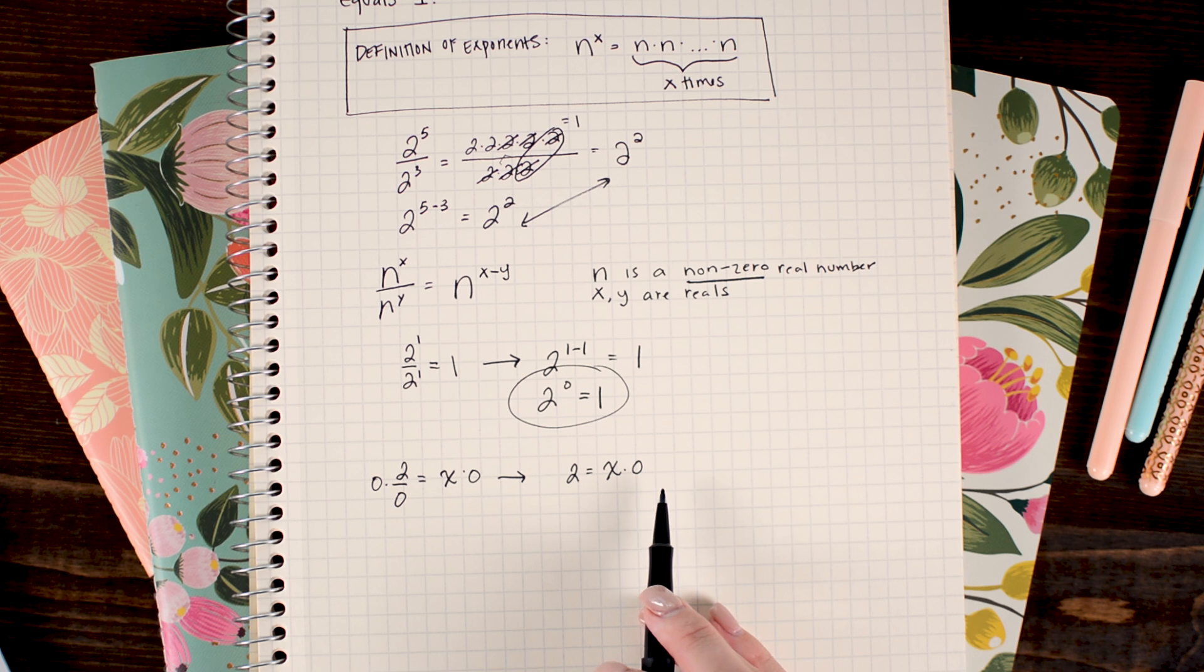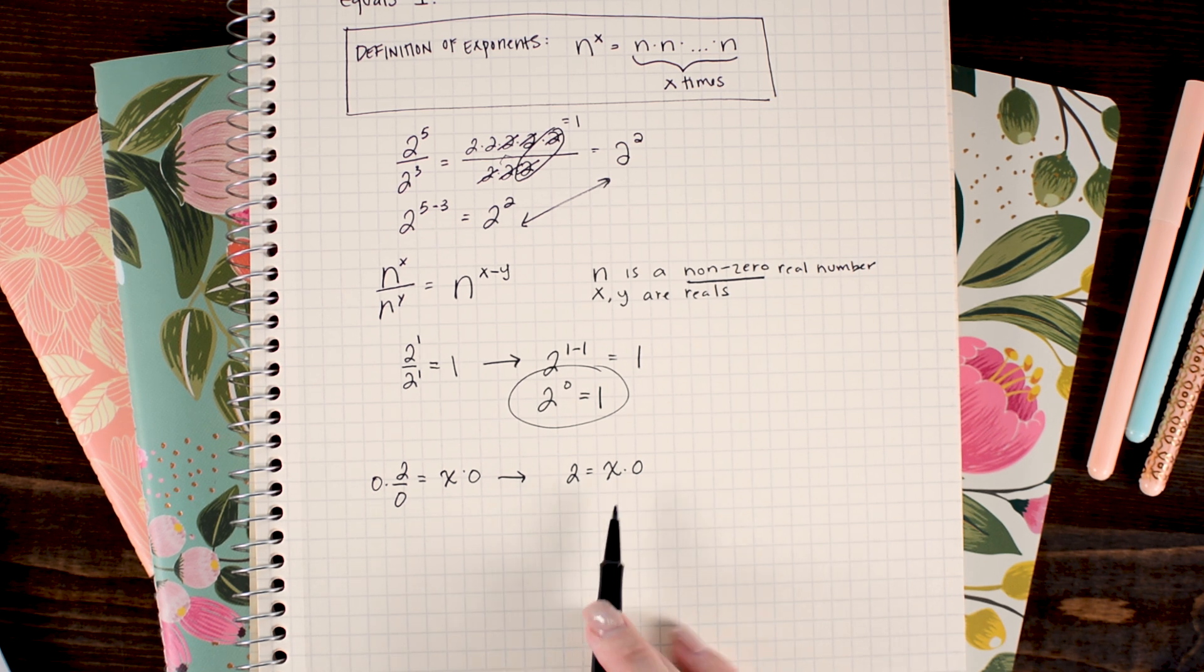All right, so now all I need to do is figure out what value for x works. Well, there's our problem. There's no real number that I can plug in for x that when multiplied with 0 will give me 2. Doesn't make any sense. And so that's where the divide by 0 error comes from. It breaks our equation.